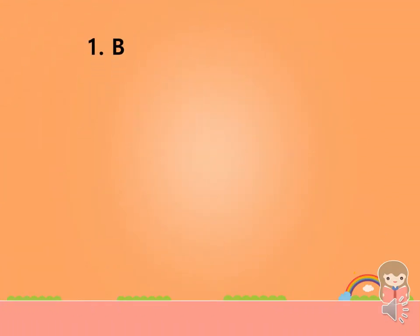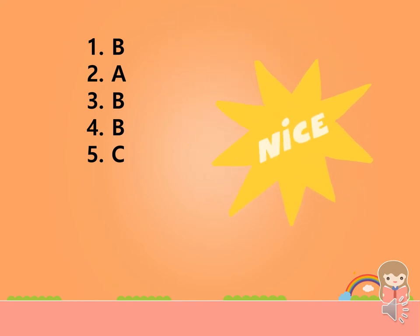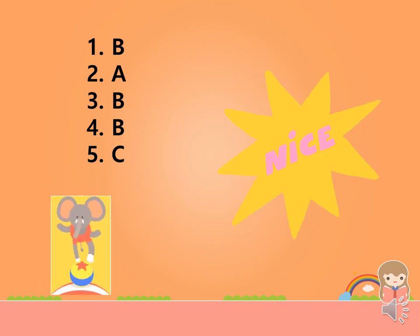Let's check your answers. Number one: B; Number two: A; Number three: B; Number four: B; Number five: C. How many correct answers did you get? Don't worry — this module will help you master the lesson about recognizing the parts of a simple paragraph. Nice start, learner! Keep moving forward.